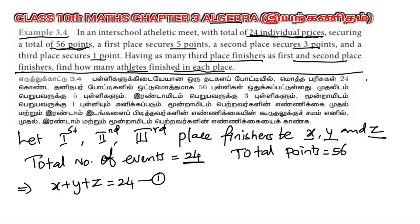Total points are 56. Here's the breakdown: first place is 5 points, so 5x. Second place is 3 points, 3y. Third place is 1 point, z. This equals the total number of points, 56. This is equation number 2.